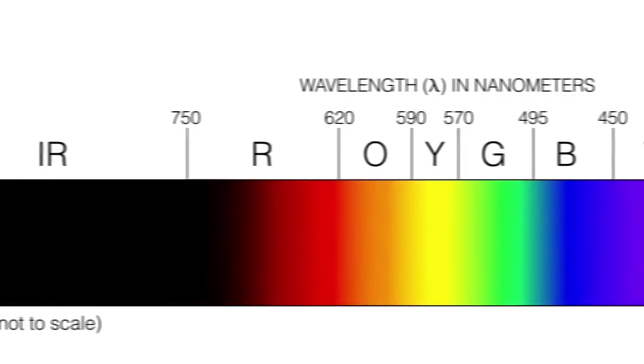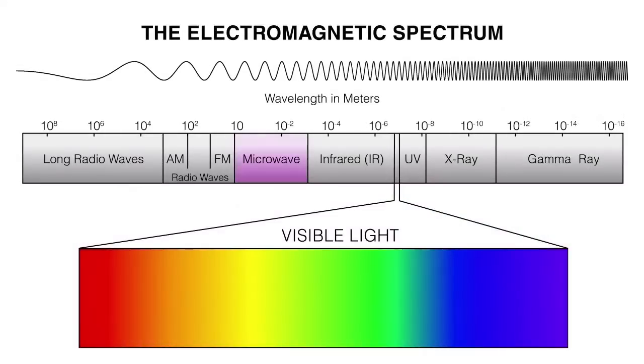Moving down the scale past visible light, you get into infrared, then microwaves, and then long radio waves. Infrared is often associated with heat because infrared energy causes molecules to vibrate faster, and we feel this as heat. In fact, everything in the universe is emitting infrared light — you are emitting infrared energy right now, but you can't see it because it's outside the visible spectrum. Unlike other forms of energy, electromagnetic radiation does not need a medium to travel through — it can travel through a vacuum. In photography, we are primarily concerned with the visible part of the spectrum, which I'll just refer to as light.